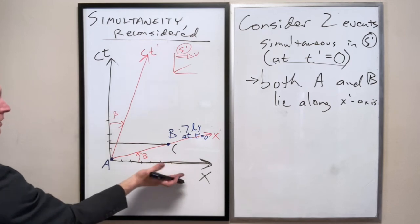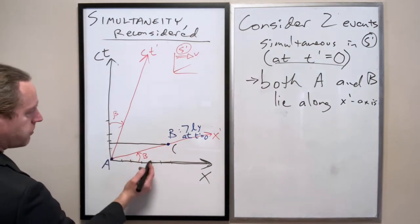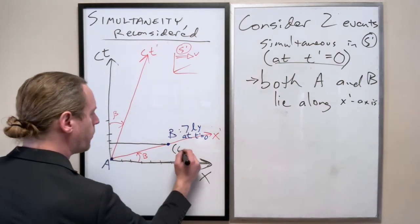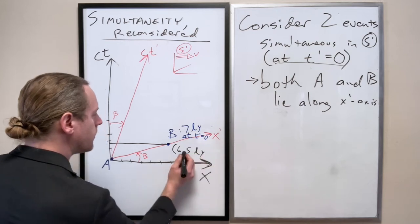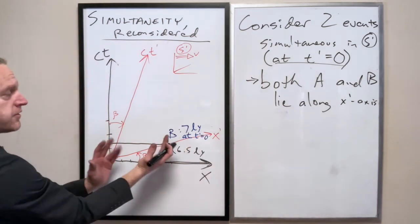So we're going to have some position in x, one, two, three, four, five, maybe 6.5 light years. I've done that pretty well. So a little bit less than this guy saw.